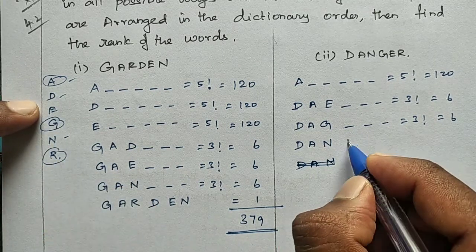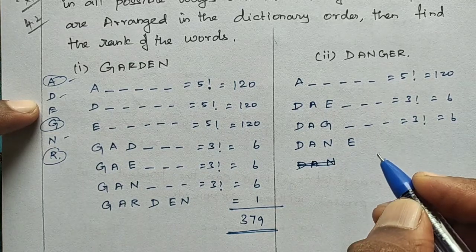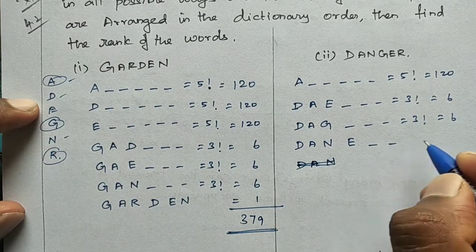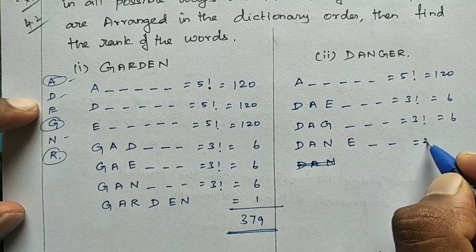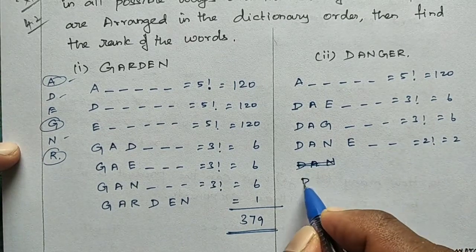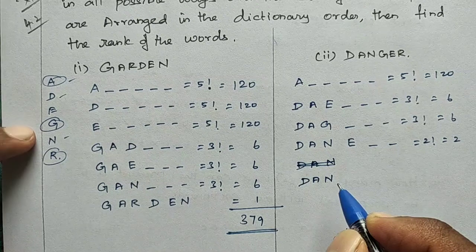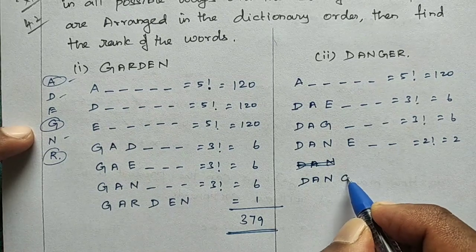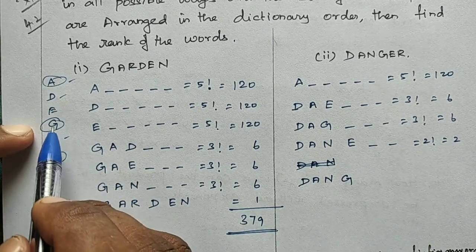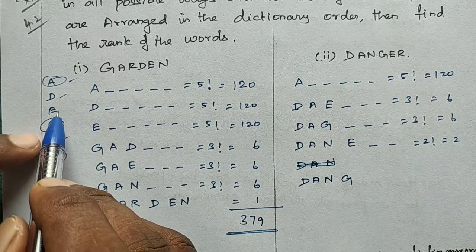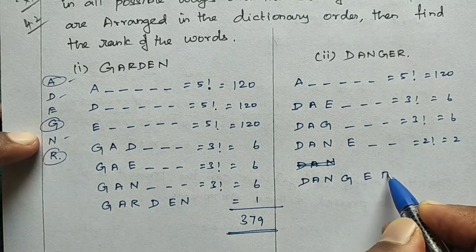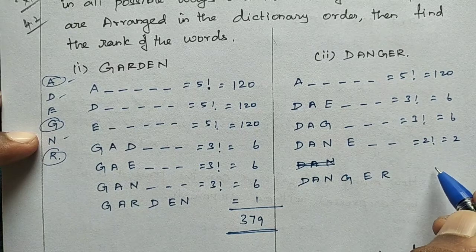Under DAN, fix letters D, A, N. The remaining letters after DAN are E, G, R. Words starting with DANE: 2 factorial = 2. Next, G is placed after E, so fix DANG. After DANG, E and R remain. DANGER has E then R, so that arrangement equals 1.